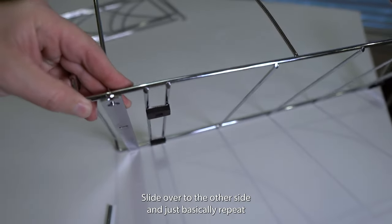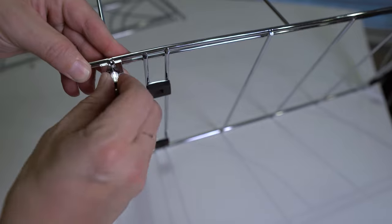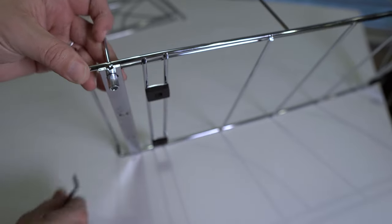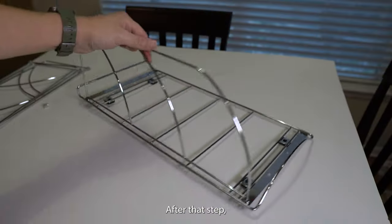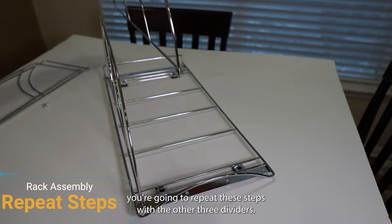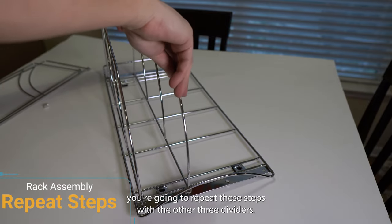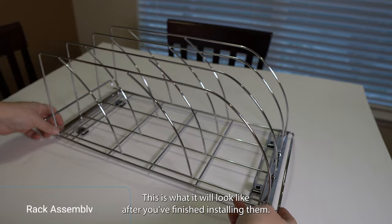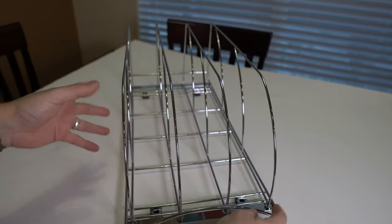Slide over to the other side and just basically repeat the steps. It'll look something like this after that step. You're going to repeat these steps with the other three dividers. This is what it'll look like after you finish installing them. Kind of cool, huh?